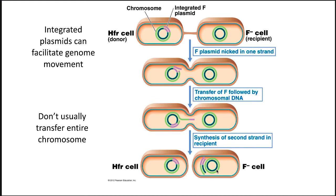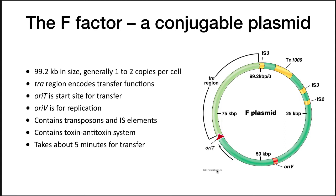The plasmid we've been talking about is called an F-factor, a conjugatable plasmid about 99 kb in size, generally present in one or two copies per cell. It has a transfer region encoding the transfer functions including the pilus, an oriT (origin of transfer) where transfer starts, and an oriV (origin of replication). It also contains a transposon and insertion sequences — these are the regions of homology that allow it to recombine with the host chromosome. This plasmid contains a toxin-antitoxin system to help maintain it in the cell, and its transfer takes about five minutes.